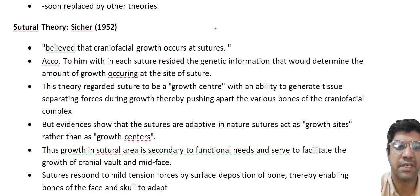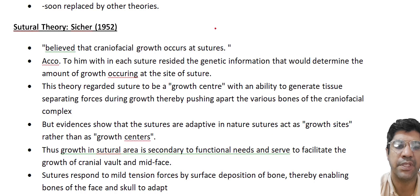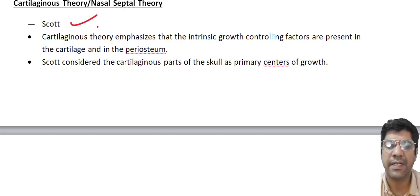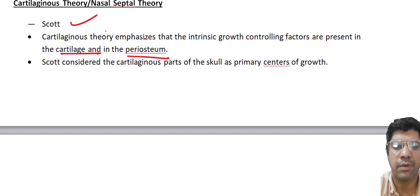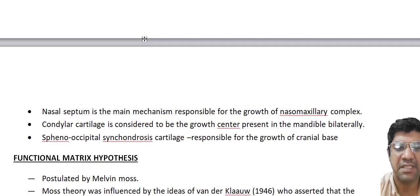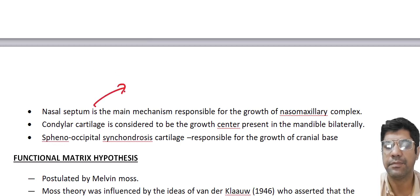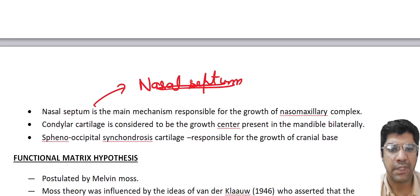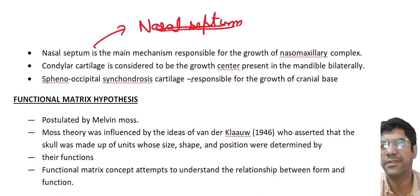When forces are exerted on the sutures — such as those generated during chewing or other functional activity — sutures can deposit new bone on the surface facing the direction of applied forces. The cartilaginous theory by Scott states that intrinsic growth-controlling factors are present in the cartilage and periosteum. According to this theory, the nasal septum is the primary mechanism responsible for growth of the nasomaxillary complex — including the growth of the upper jaw and associated structures. As the nasal septum grows, it exerts growth-related forces on the surrounding craniofacial bone.